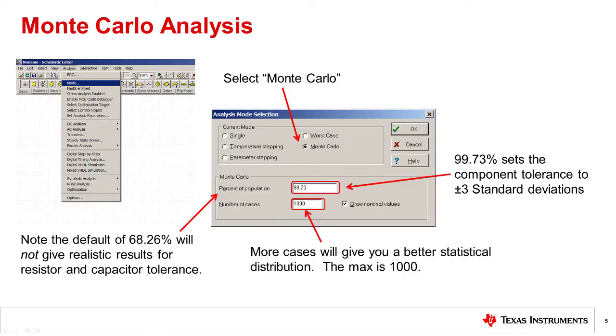To turn on Monte Carlo analysis, select Mode under the Analysis menu option. In the Analysis Mode selection window, select Monte Carlo.